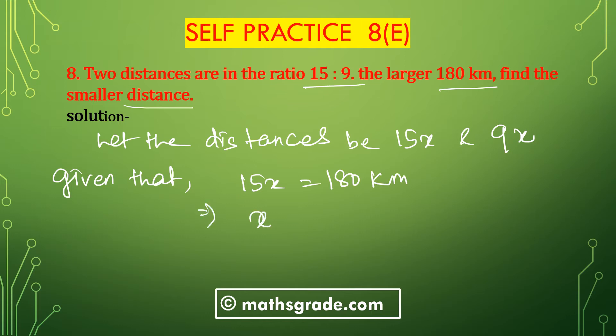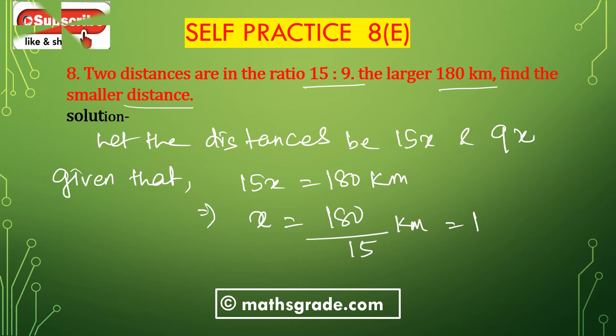This implies 15x = 180. Transposing 15 to the right hand side, multiplication changes to division, so x = 180 divided by 15, which gives x = 12 kilometers.